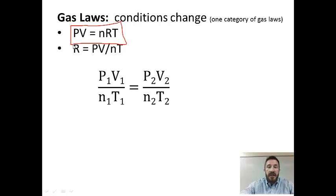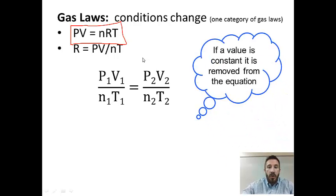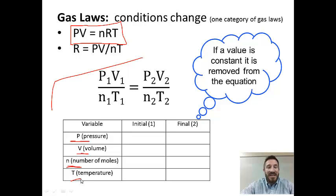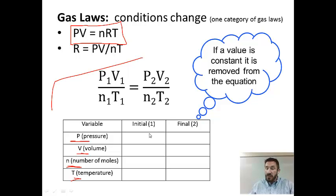The subscripts 1 and 2 refer to different conditions — condition set one and condition set two. There are four variables: P for pressure, V for volume, N for number of moles, and T for temperature. You look at which of these changed: it could be three, two, or just one. Then you compare the first set of conditions to the second set.